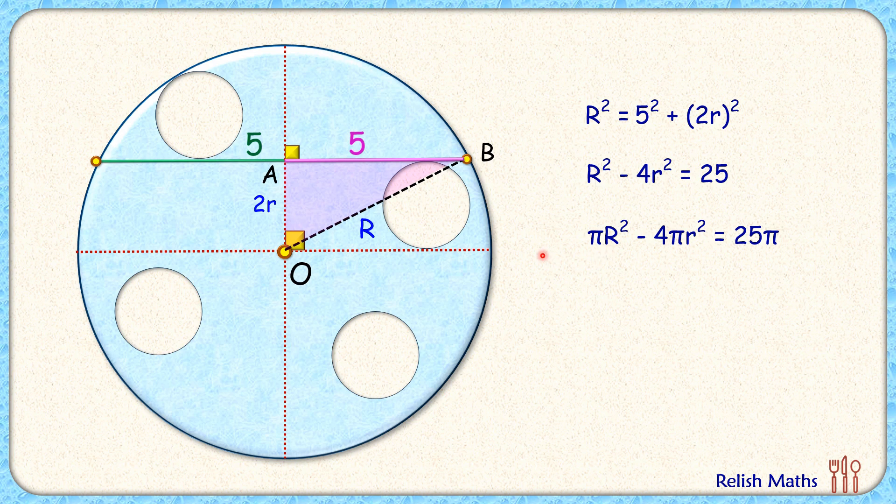πR² is the area of the full big blue circle, and 4 times πr² is the area of these 4 small circular holes. So πR² - 4πr² is the area of the remaining blue region, and that's what we had to find. So the area of the blue region is nothing but 25π cm², and that's our answer.